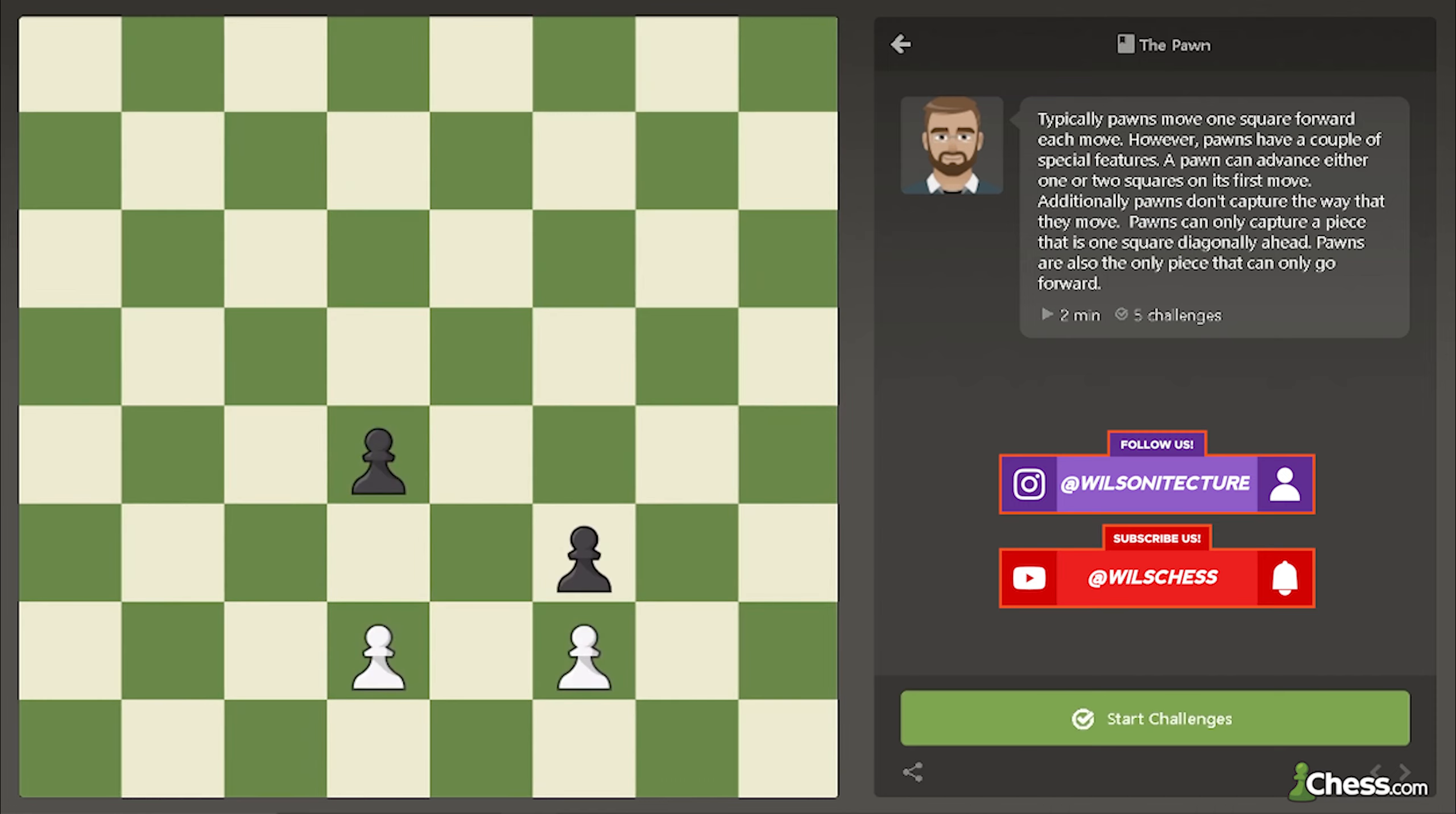In this position, how many white pawns can move? If you said one, you're correct. Notice that this pawn is blocked by the black pawn directly in front of it. Remember, pawns cannot move backwards.